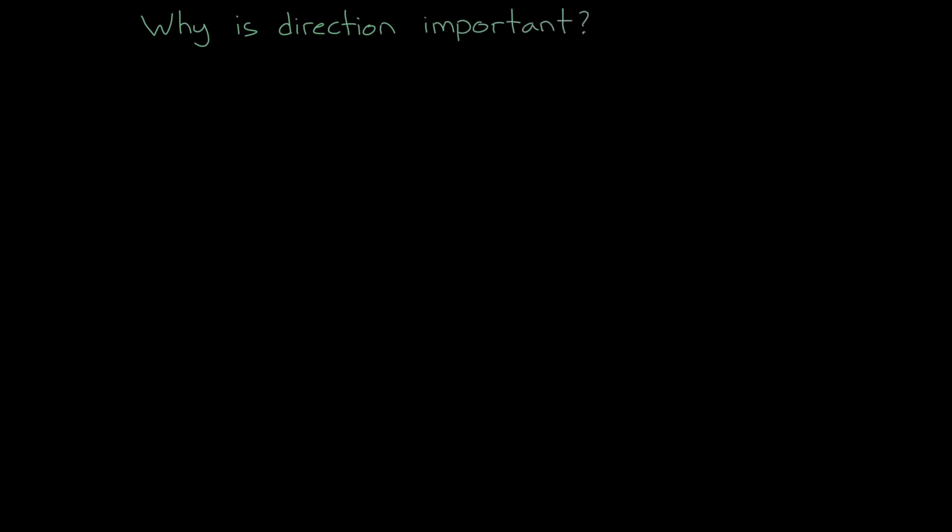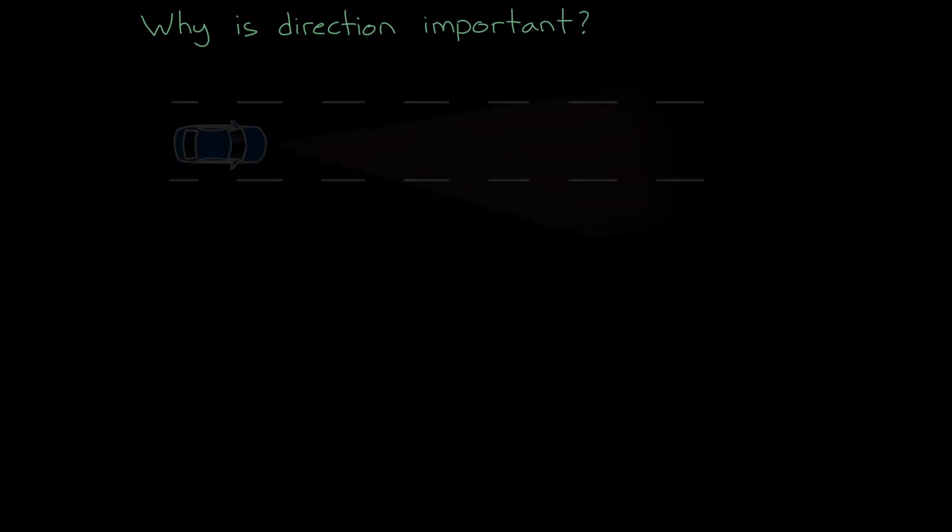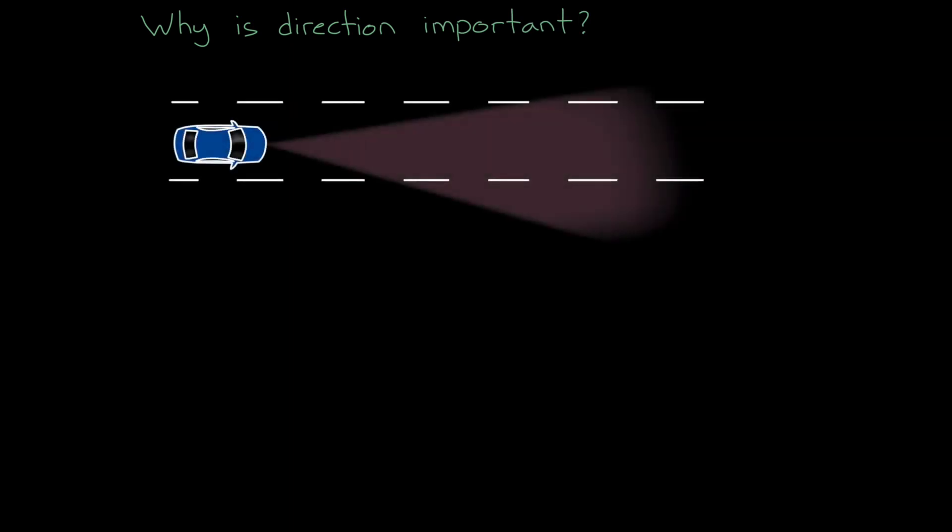Let's start by briefly discussing why it's important for the radar to know the direction to the detected object. And as an example, let's take the forward-facing radar that is used for an adaptive cruise controller. A radar detection would indicate that there's an object somewhere in front of the vehicle, and we would know the distance and the relative speed to that object.